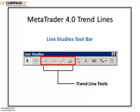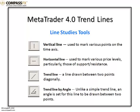We're going to focus on the four trend line tools. Let me give you a bit of a definition. The vertical line trend bar is designed to mark various points based upon a time axis, whereas the horizontal line is designed to mark various price levels, as if you're setting support and resistance levels.